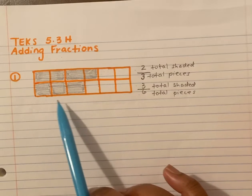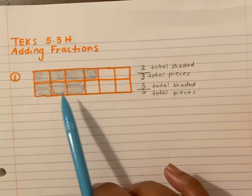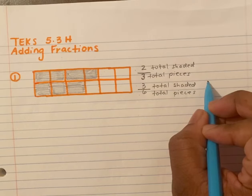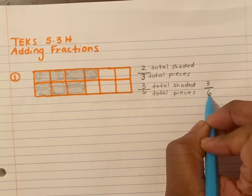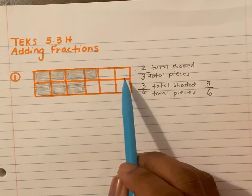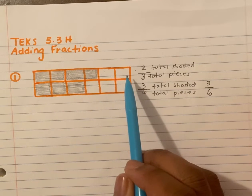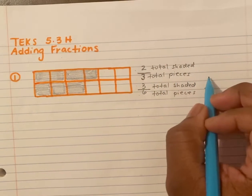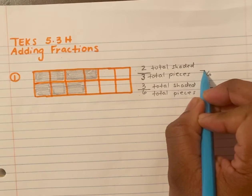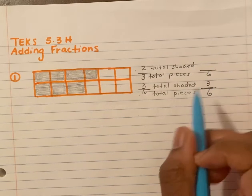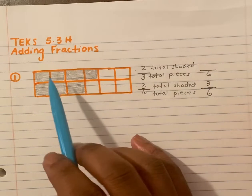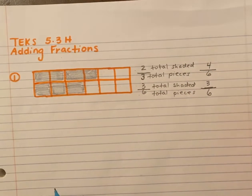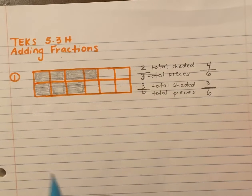Will this one change? No, this will stay the same — this will still be three shaded over six pieces, so this could be three over six. What about the other one? How many pieces do I have now? One, two, three, four, five, six — so I do have the same denominator now. I have six pieces; of the six, how many are shaded? One, two, three, four — four out of six are shaded.